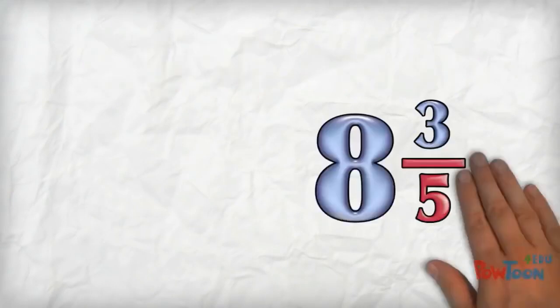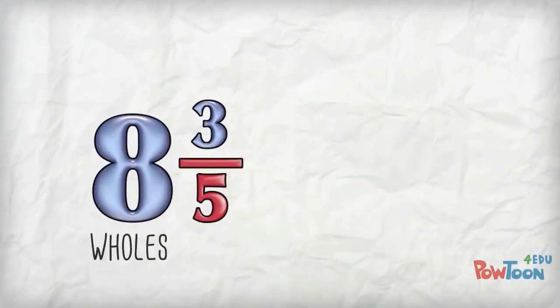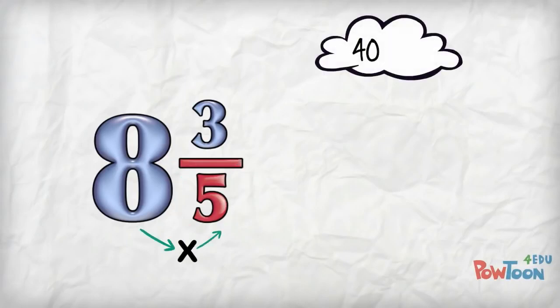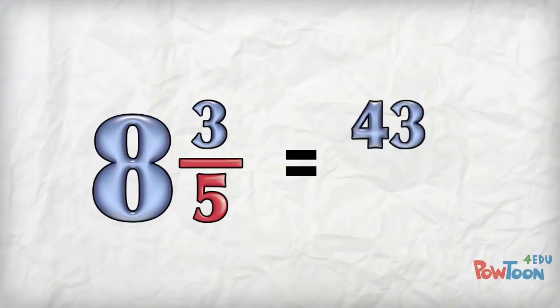Last one. 8 and 3 fifths. 8 wholes. Each whole is worth 5 parts. So 8 times 5 is 40, plus the remaining 3. That's 43. Put that back over the denominator of 5. Done!